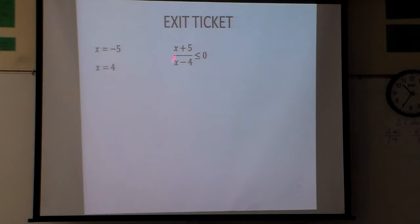So the only places that I can change directions are at negative 5 and 4. So what I'm going to do is make a number line at negative 5 and 4.